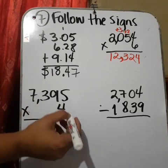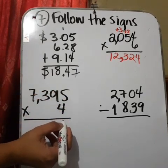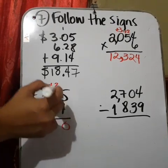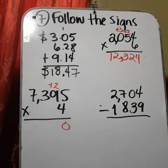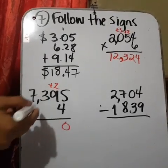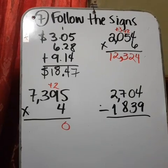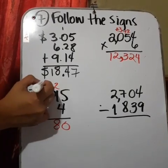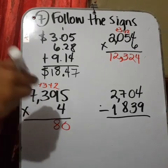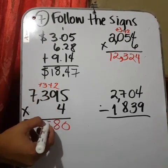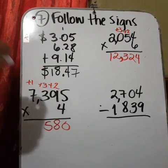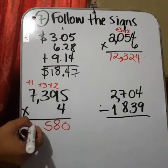7,395 times 4. 5 times 4. 20. 4 times 9. 36. 36 plus 2. 38. 4 times 3. 12. Plus 3. 15. 4 times 7. 28. Plus 1. 29.